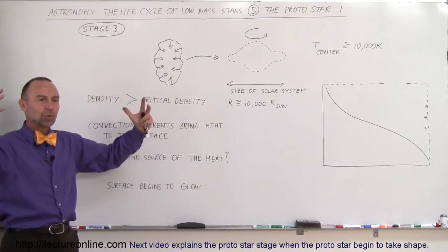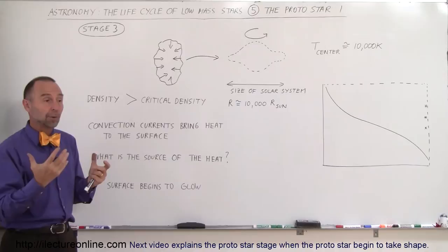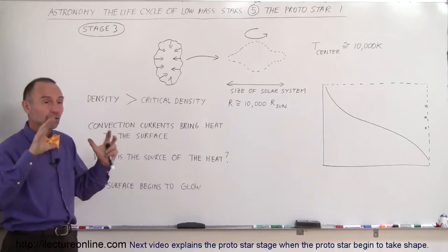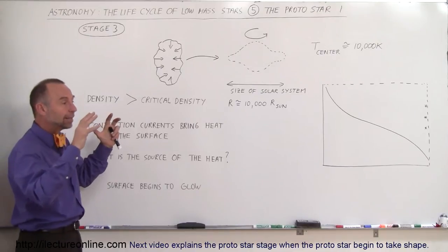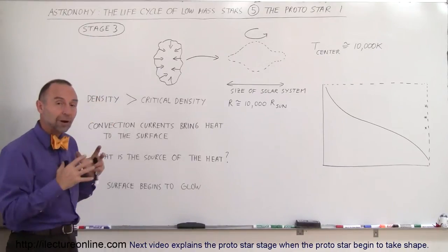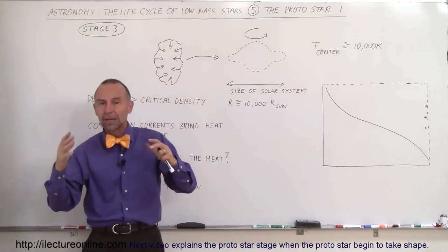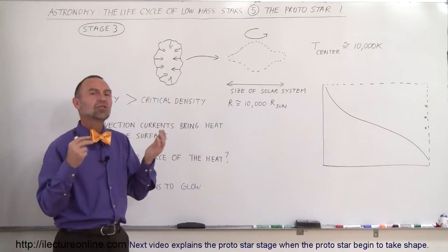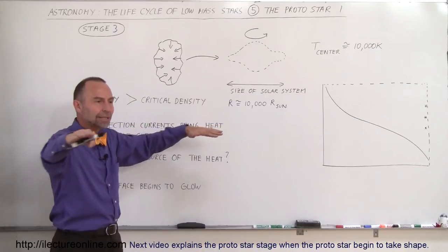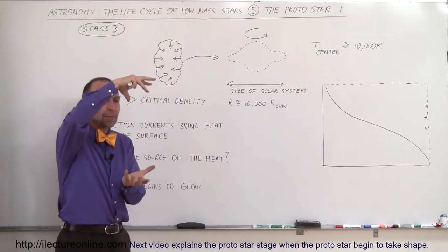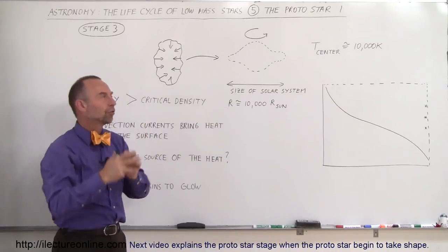As the cloud of dust and gas rotates, because of the conservation of angular momentum, that rotational speed will begin to increase. As the cloud continues to collapse under gravity, the rotation speeds up more and more. As it begins to speed up, it begins to change its shape, flatten along the center, and become more spherical on the top and bottom.